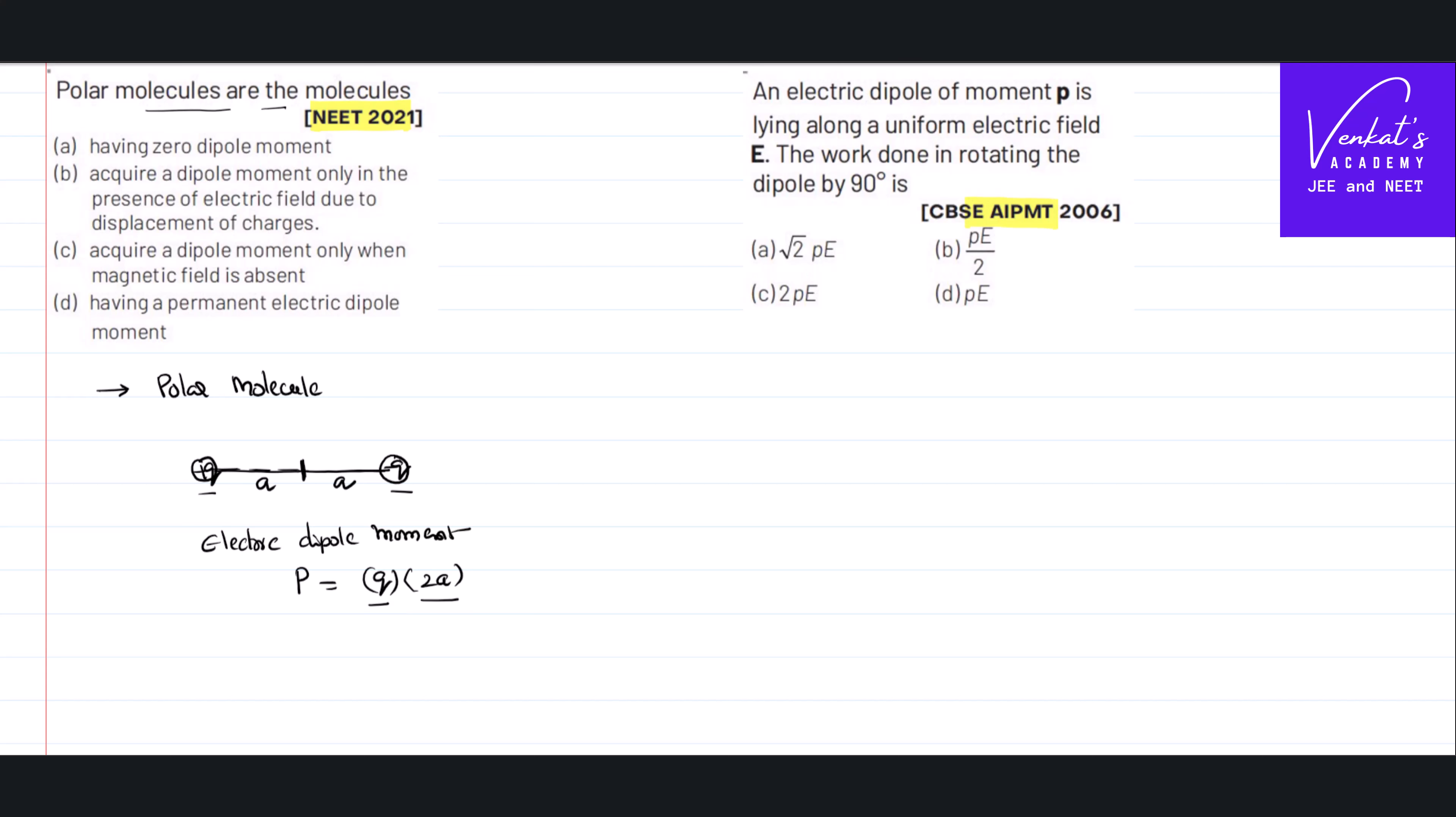A polar molecule does always have some dipole moment. So option d - it has a permanent electric dipole moment - is correct. Having zero dipole moment is wrong. It doesn't need an electric field or magnetic field to acquire a dipole moment; it is always there. So that's the answer: answer d. Let's have a look at the next question.